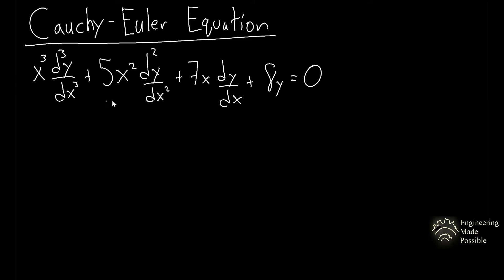For instance, consider the differential equation: x cubed times the third derivative of y, plus 5x squared times the second derivative of y, plus 7x times the first derivative of y, plus 8y equals zero. This has variable coefficients — the variable x appears, and what makes this a Cauchy-Euler equation is that the order of the variable matches the order of the derivative. x cubed pairs with the third derivative, x squared with the second derivative, and so on. This is also known as an equidimensional equation.